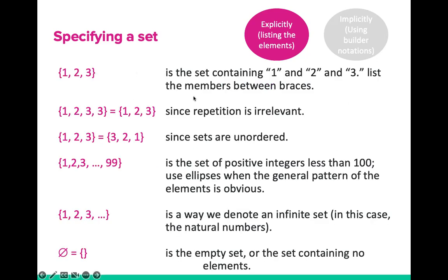Here are more examples. We have a set containing elements 1, 2, 3 — this is simply written down with members between curly braces. We also have a set containing 1, 2, 3, and 3. From the property that sets have no duplicate elements, this is equivalent to 1, 2, and 3, since the repetition is irrelevant. And the set 1, 2, 3 is equivalent to 3, 2, 1 — since sets are unordered. As you can see, they have the same elements, just in different order.